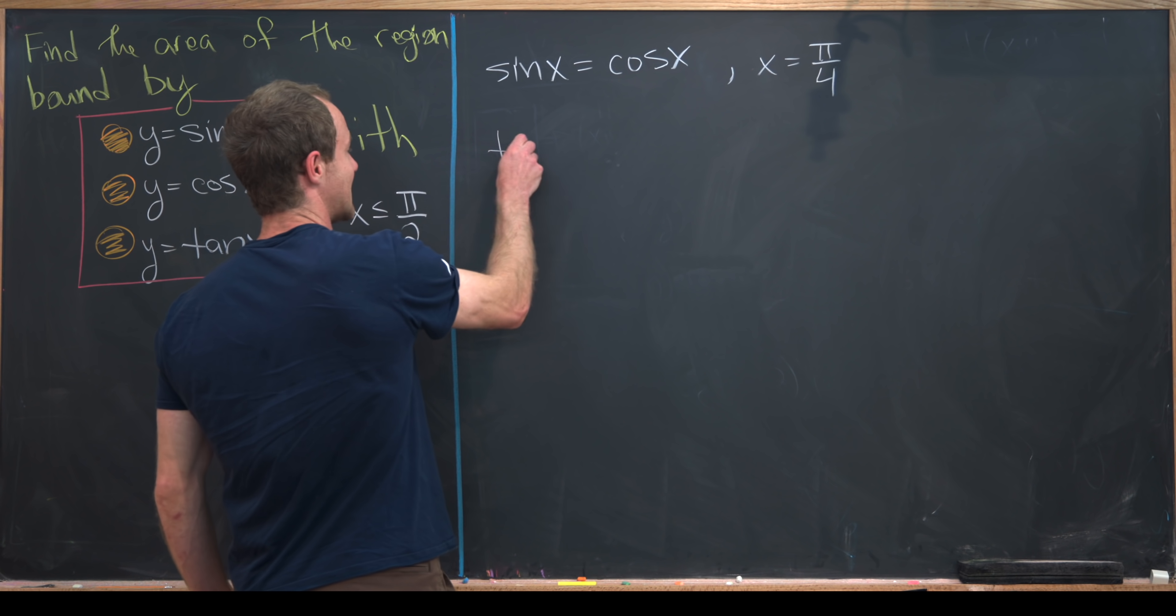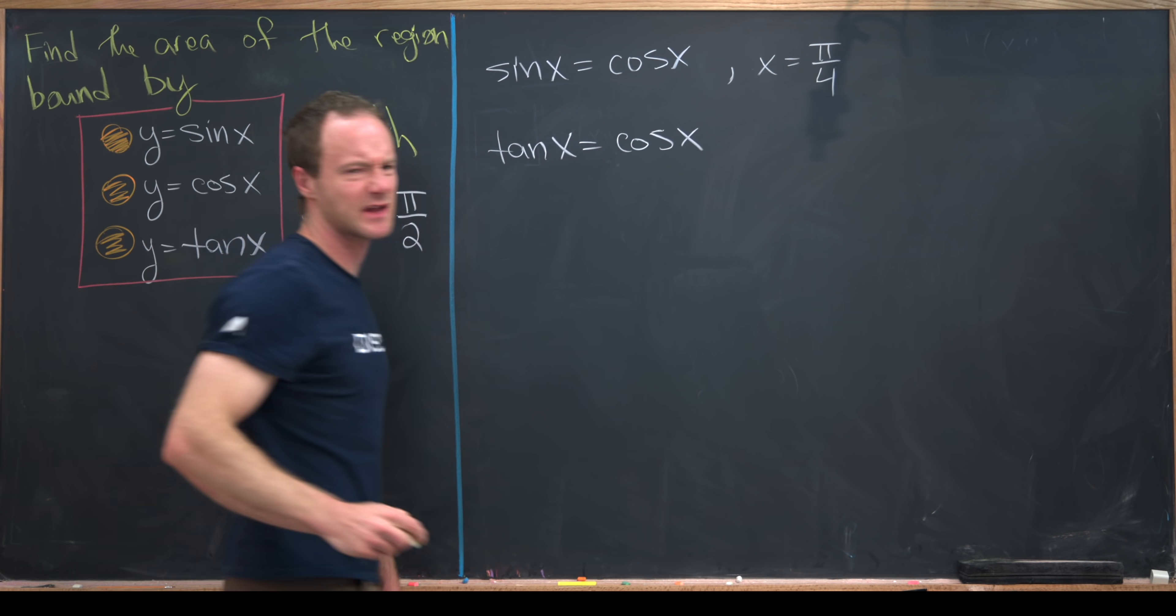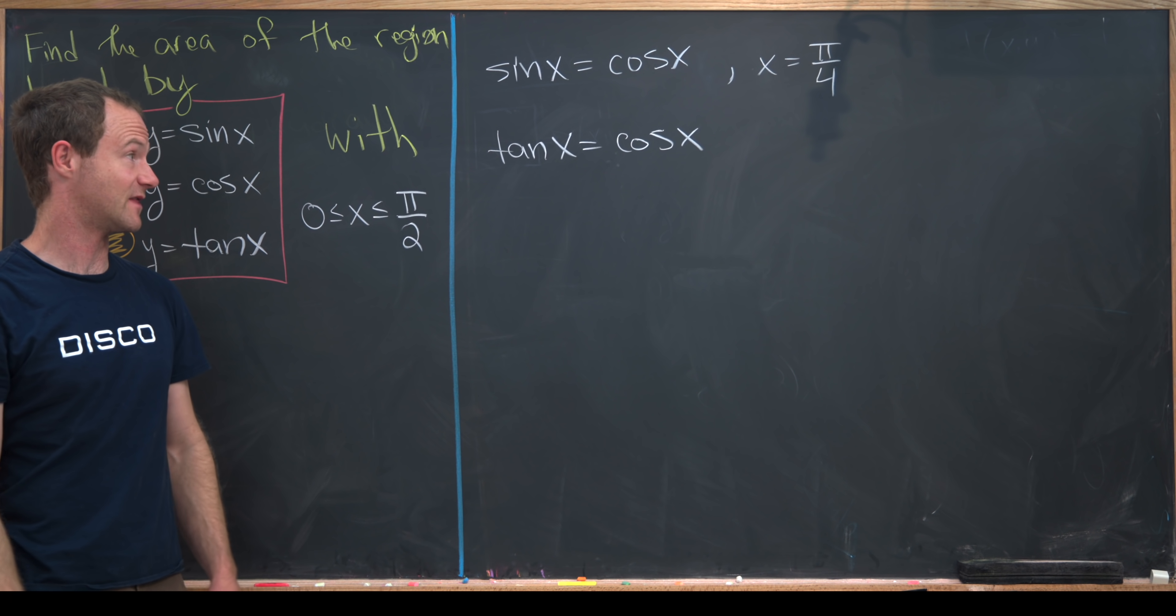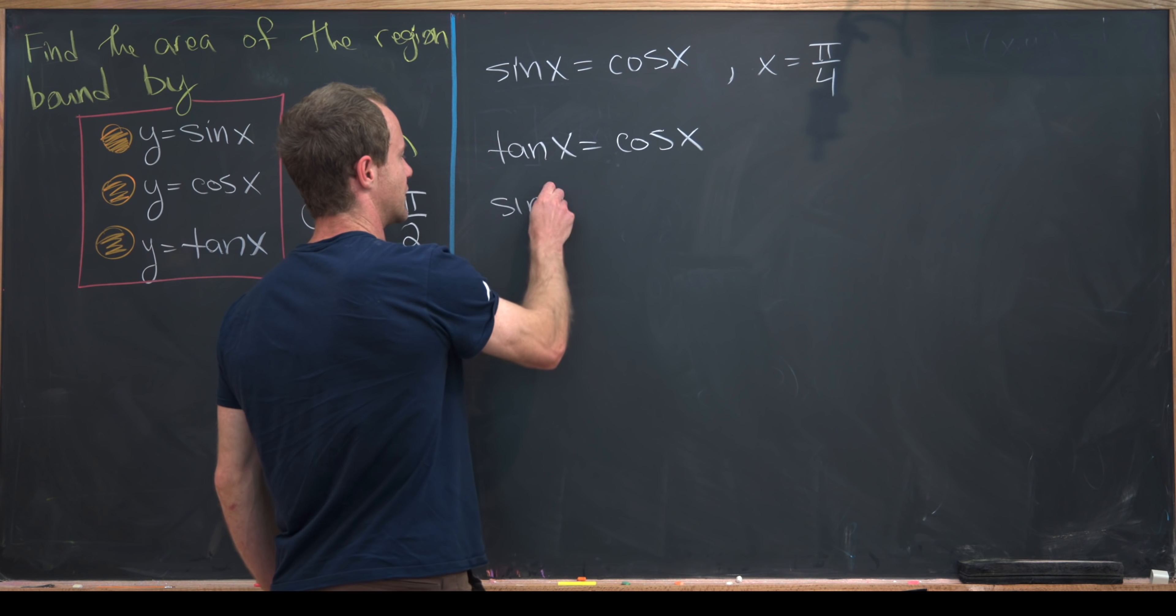Let's set tangent equal to cosine and see if we can find the x value that makes that true. Let's recall that tangent is equal to sine over cosine.